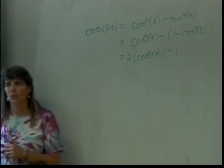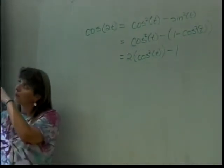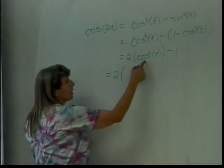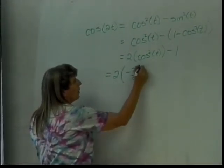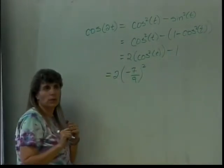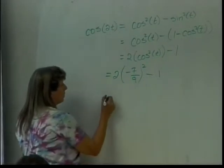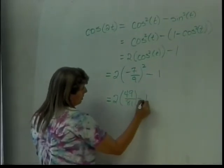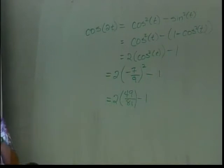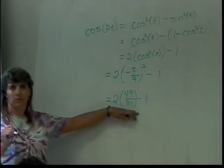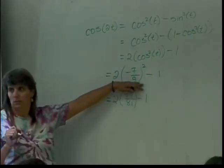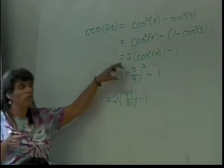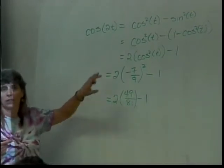Now can I answer my question? Yes — 2 times negative 7 over 9, squared. So using that information I was given, this will be 2 times cosine of t is negative 7 over 9, and the cosine is squared. So I square negative 7 over 9 and then subtract 1. That gives me 2 times 49 over 81 minus 1. I would expect in WebWork this answer will suffice, because once you've done the calculation, this is as far as it needs to go.